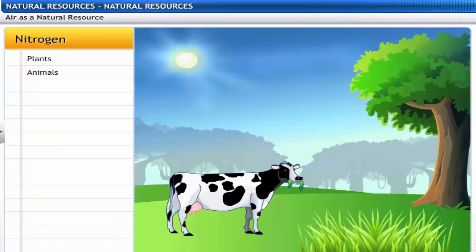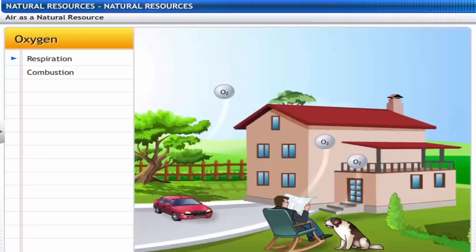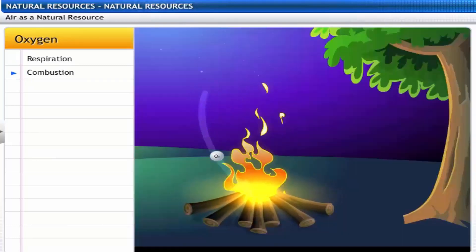Nitrogen is used to produce a number of organic molecules like proteins. Nitrogen is fixed in plants and is transferred to animals through the food chain. Plants and animals use oxygen for respiration. Combustion of fossil fuels also requires oxygen.